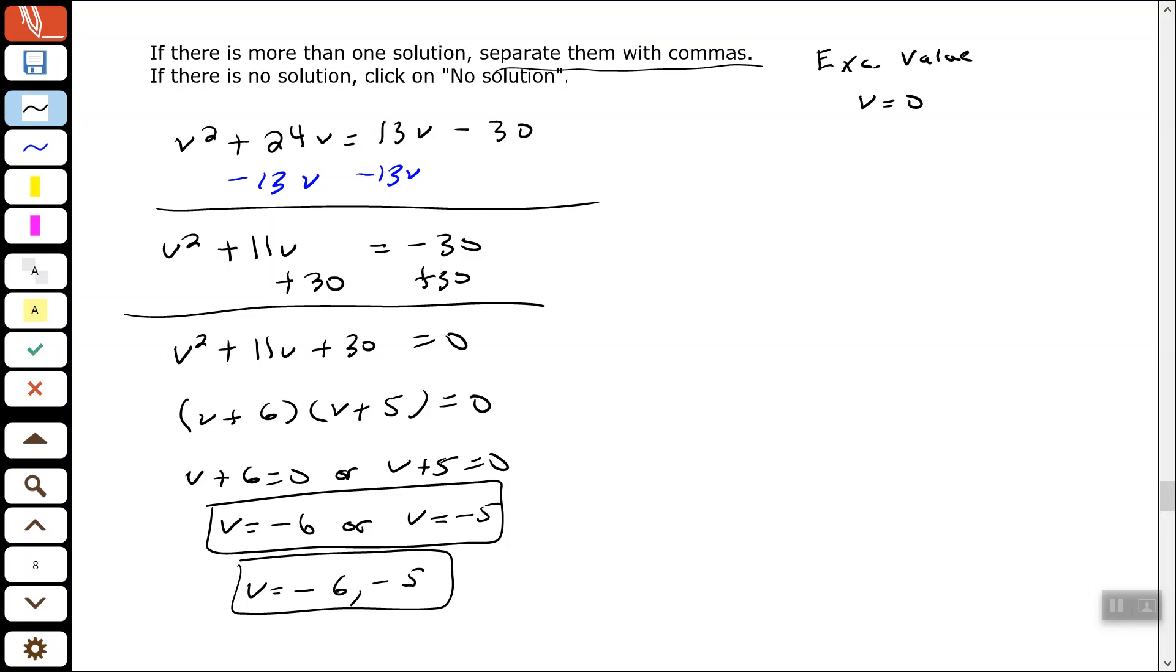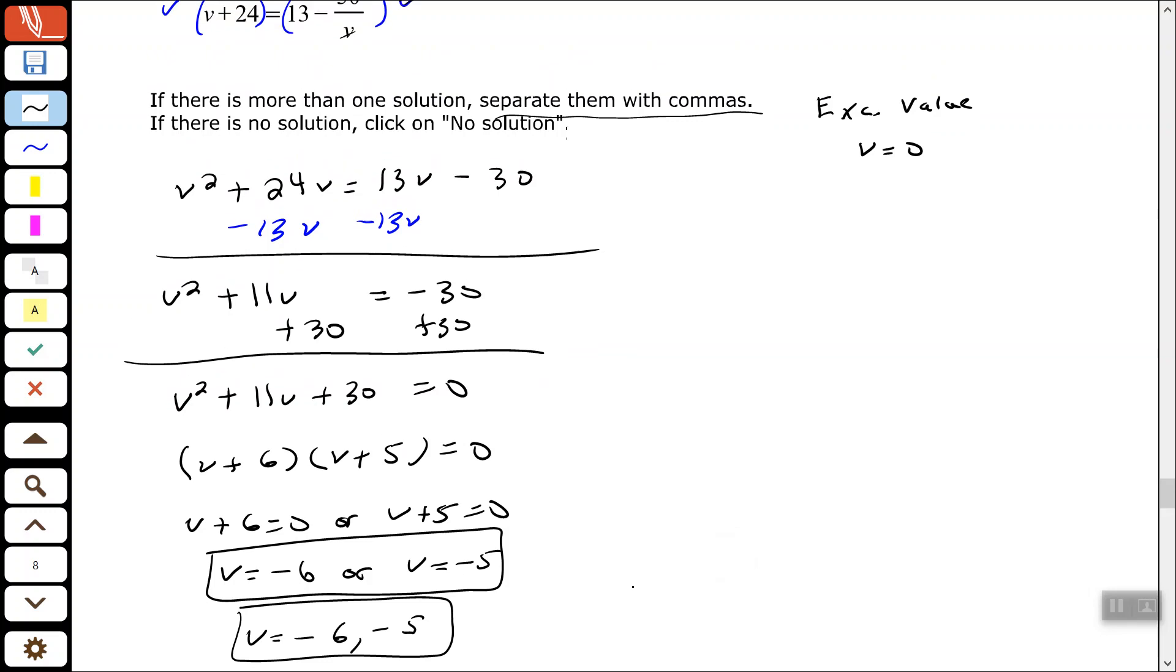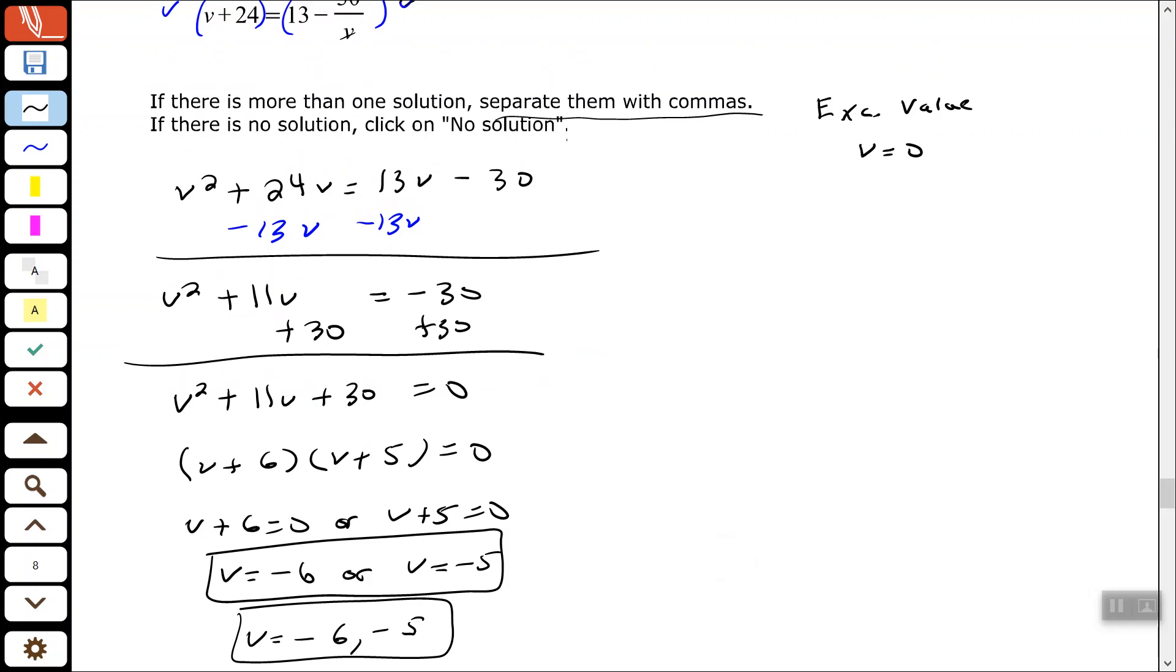All right, so we went through the same process, except this time we ended up with a variable squared. So we had to move everything to one side, factor, and then solve the equation. All righty, good people. Hope you found this video to be helpful, and I will see you on the next one. Thank you.